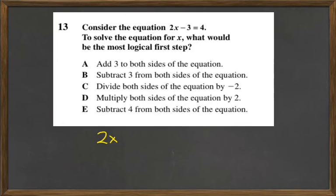So we have 2x minus 3 equals 4. The first step I would want to do is, since I'm trying to get that x by itself, I want to get rid of this negative 3 on the left-hand side. To do that,